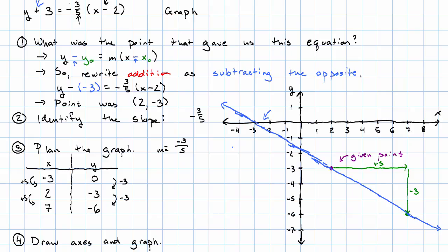So what did we have to do? Figure out what the point was. Figure out what the slope is. Figure out what our axes need to look like. And then plot the point and use the slope.